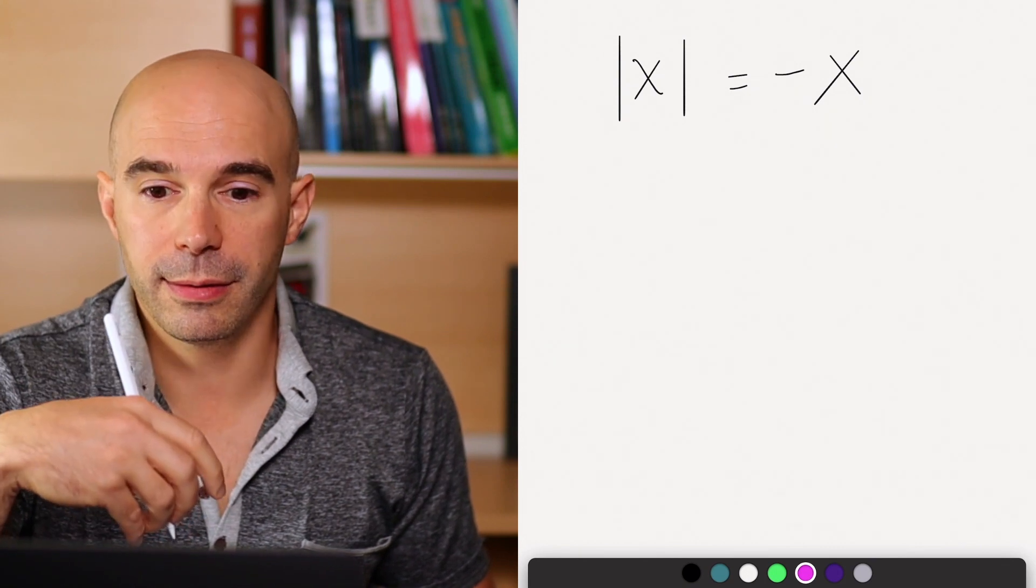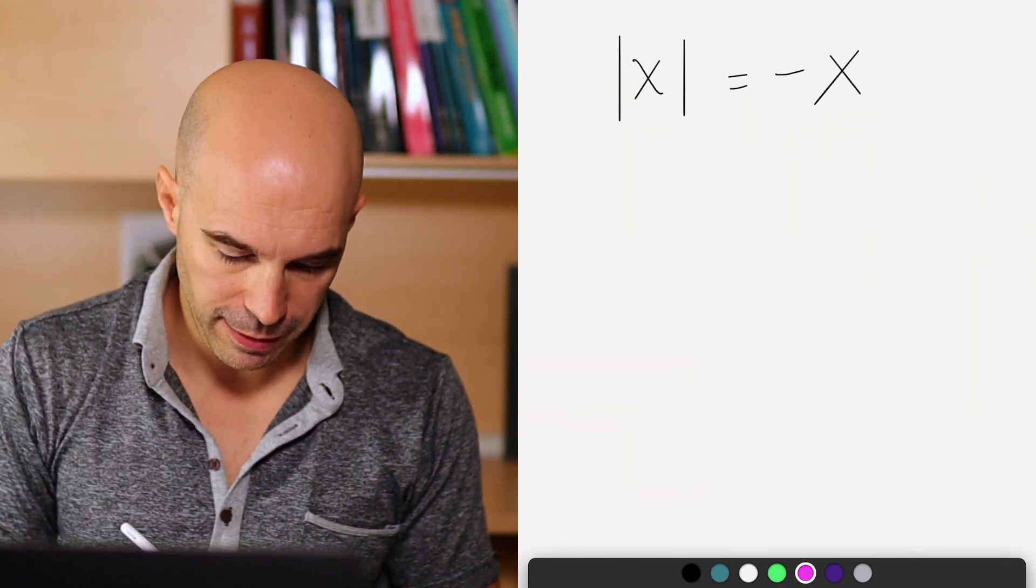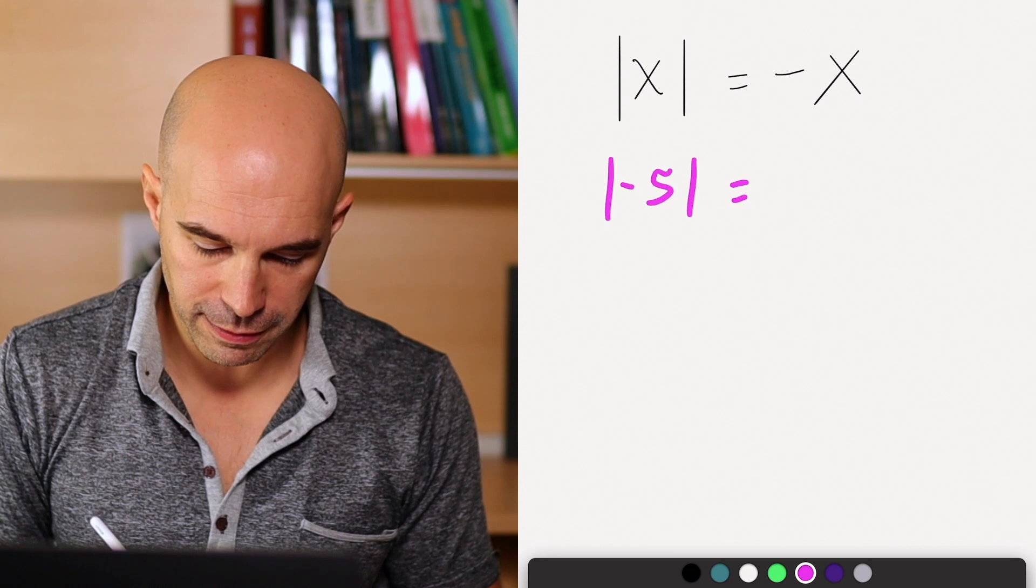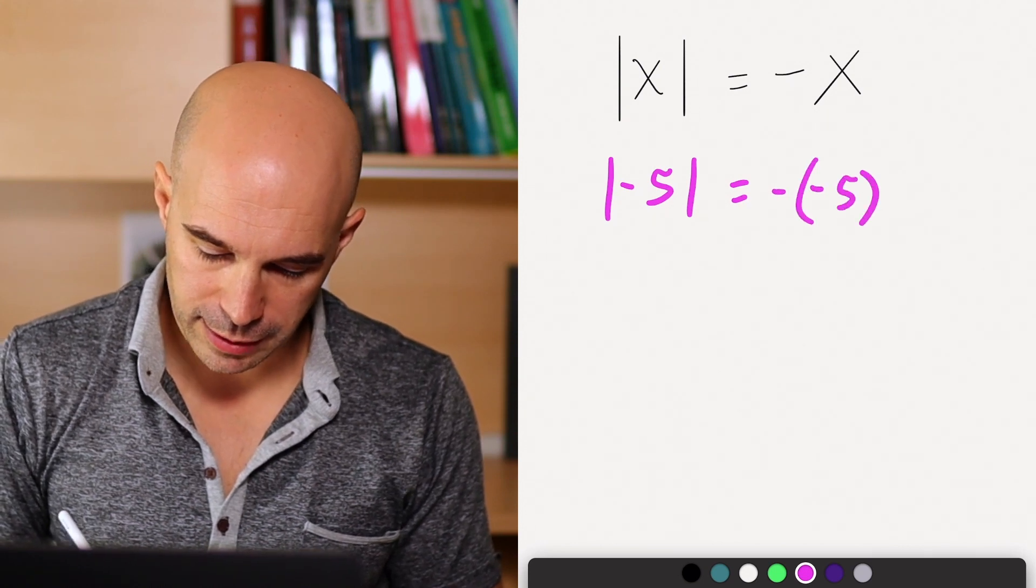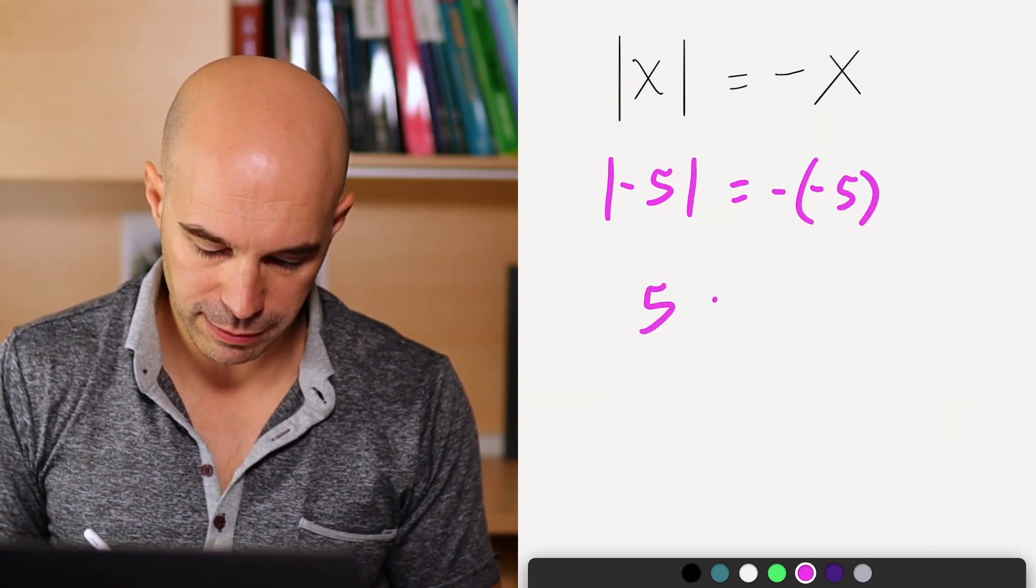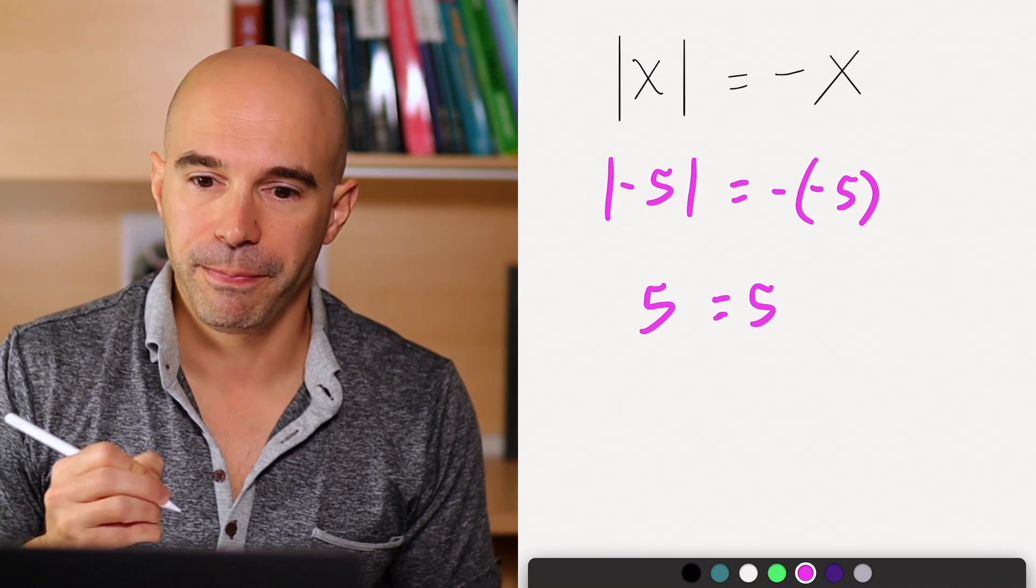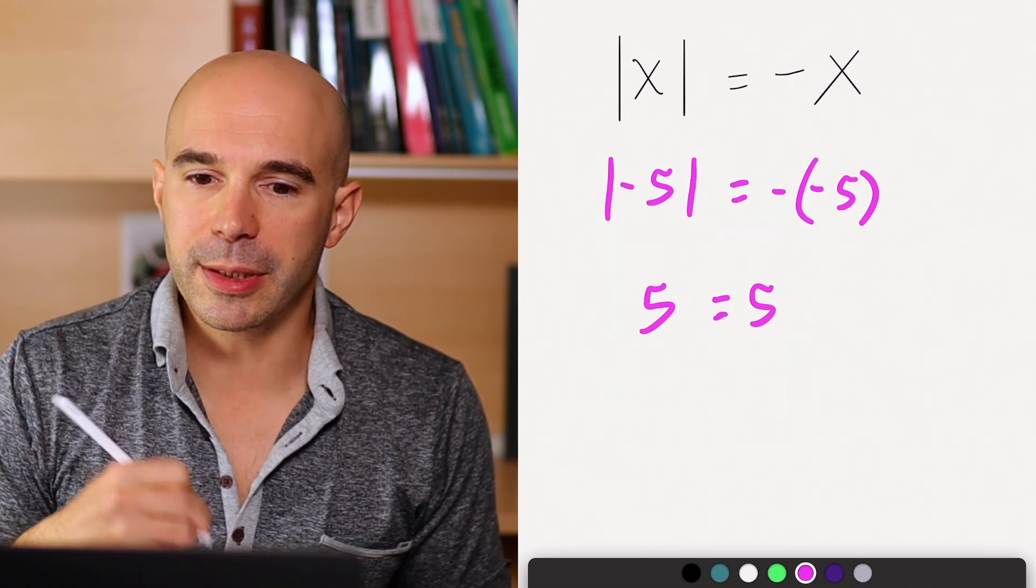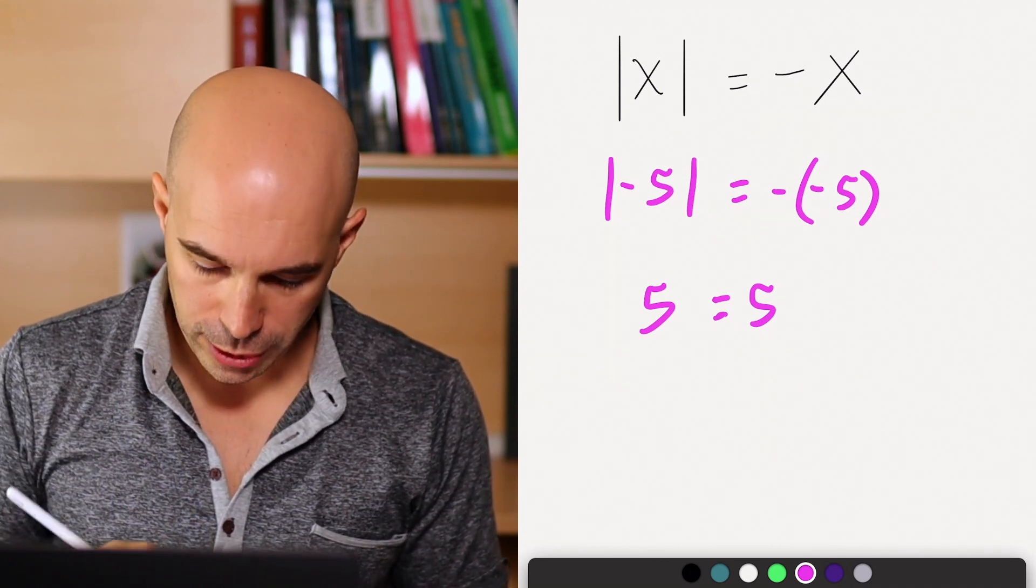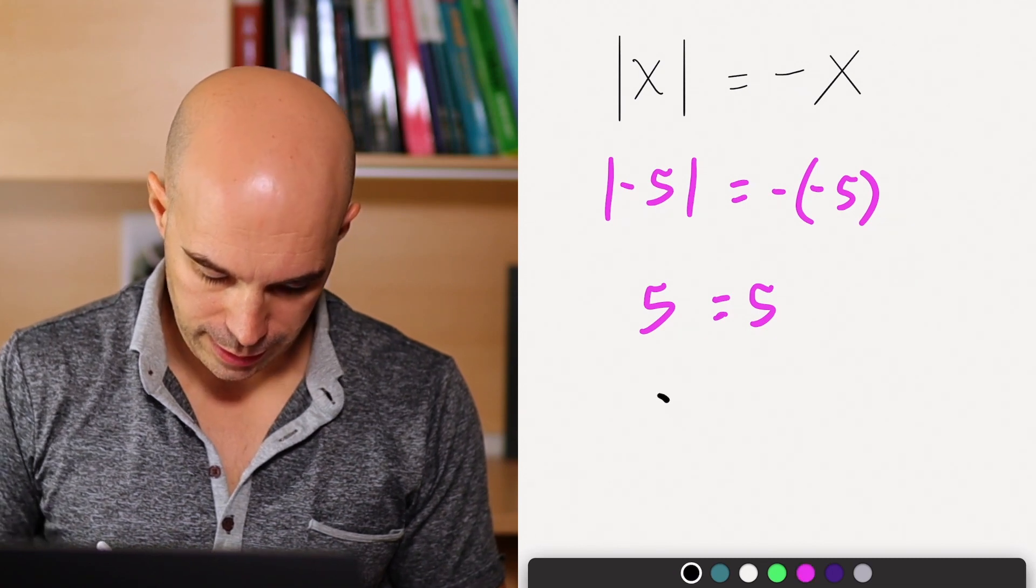For example, if X is minus 5, negative X is 5.